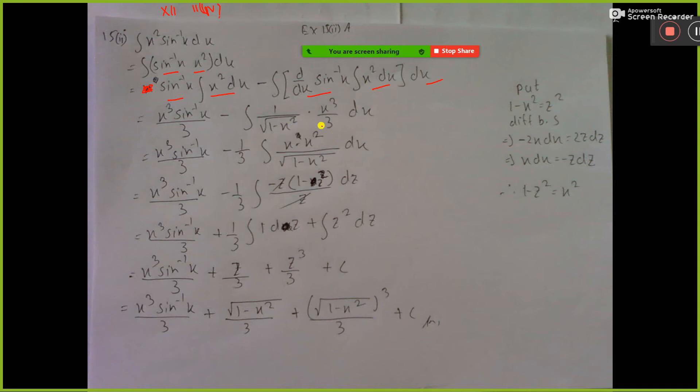So we can write here x cube means x into x square, then if you consider 1 minus x square equal to z, then x dx equal to minus z dz, and 1 minus z equal to x square, so here you put x square equal to 1 minus z, and this is minus dz.